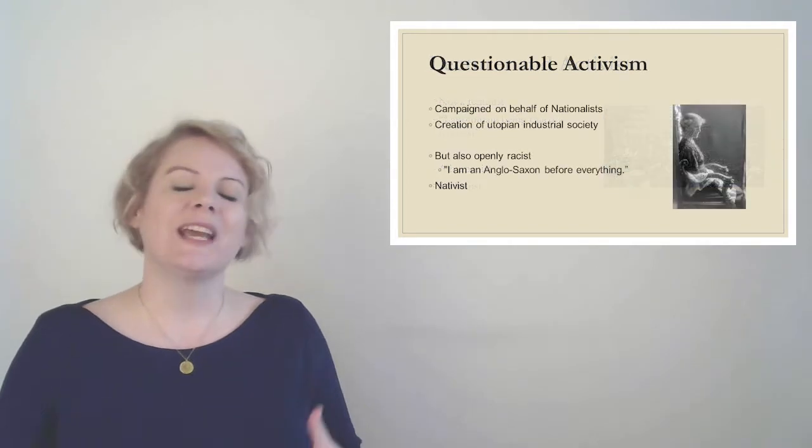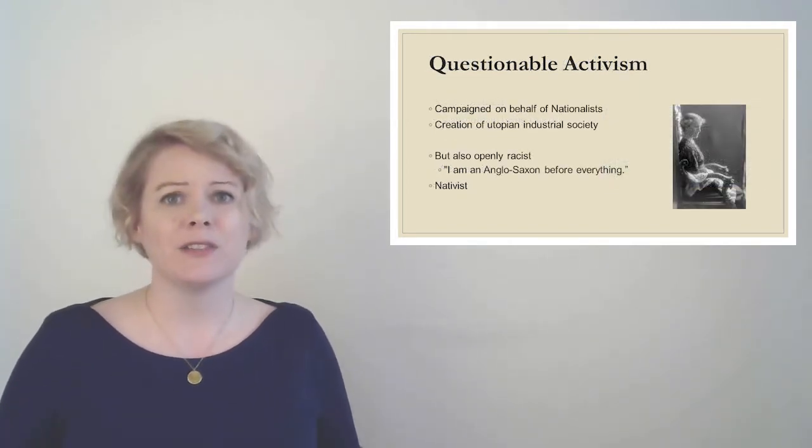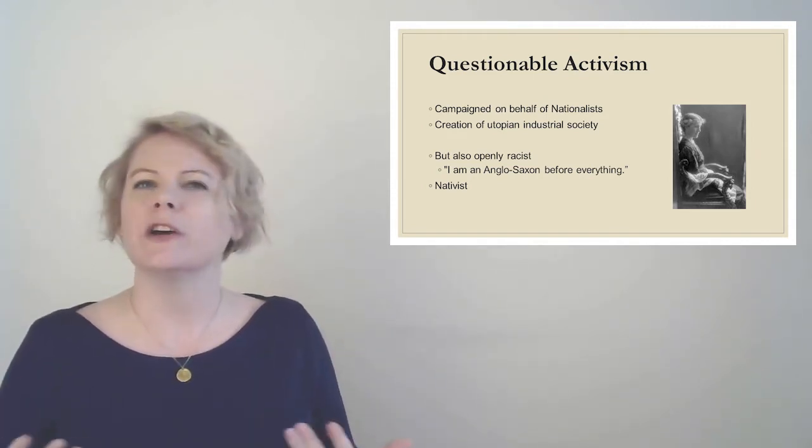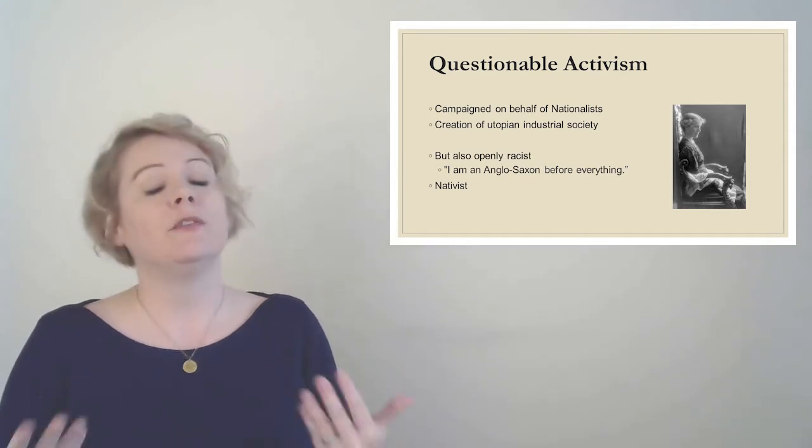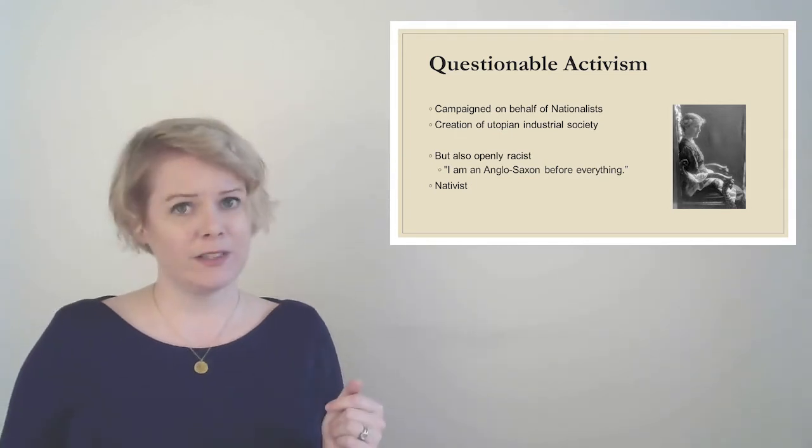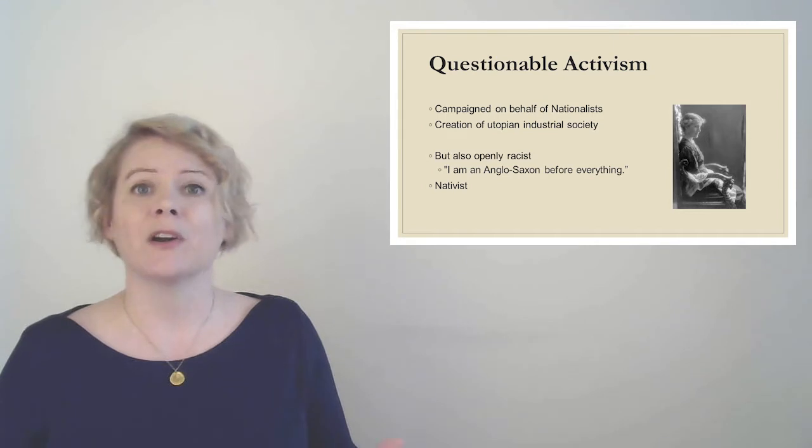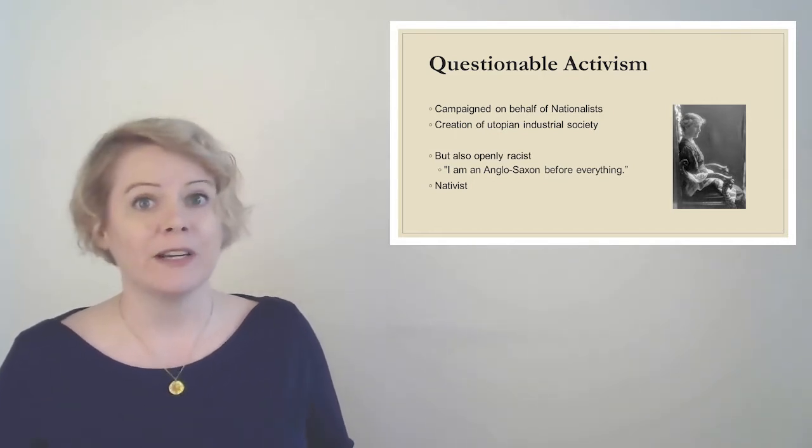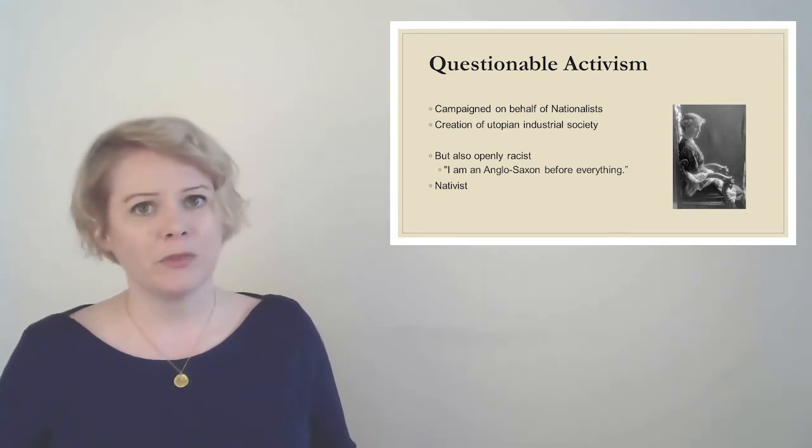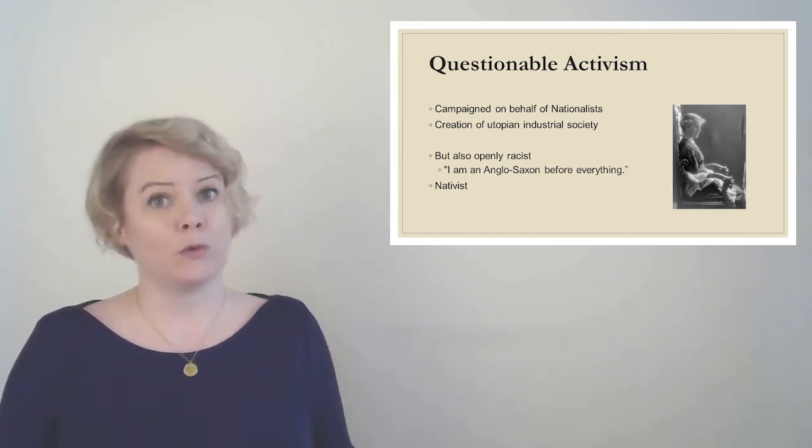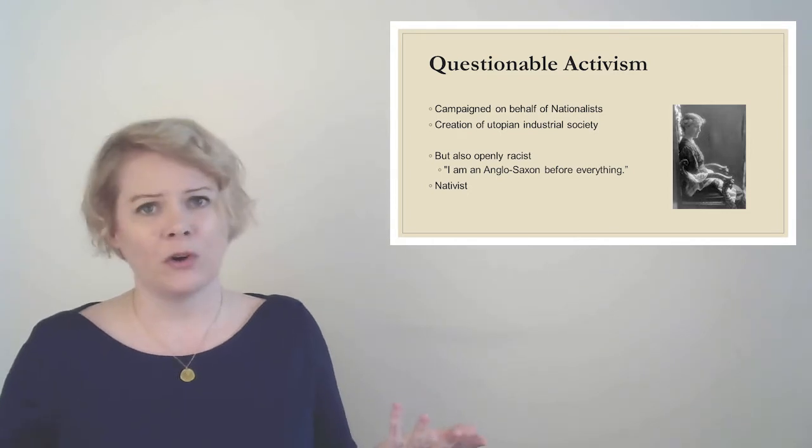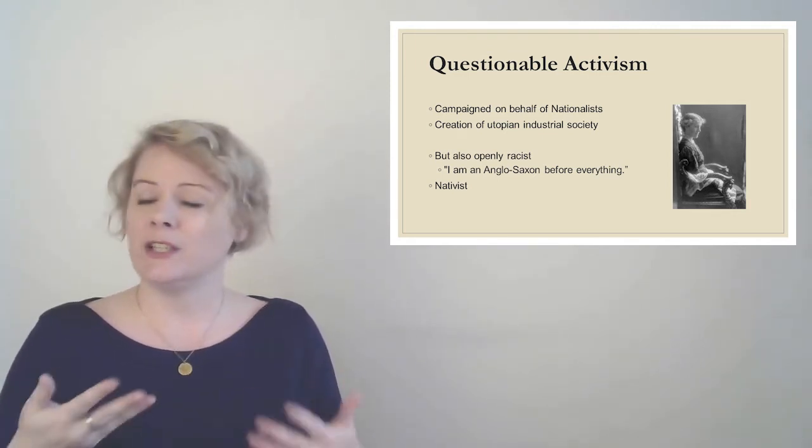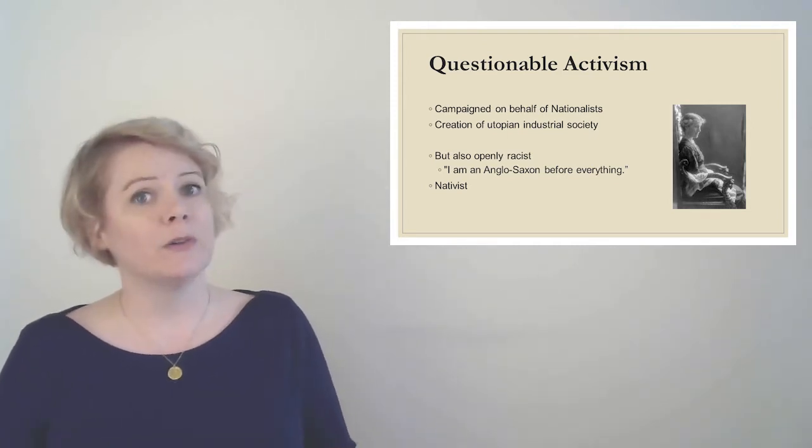She also, it's important to acknowledge, was engaged in some more questionable activism and some outright racism. She was a nativist. The nativist believed not that the native people to North America were the best, but that the recent immigrants, the white people, were the best. So basically the nativist believed that they were Anglo-Saxon above everything, which she outright said, and that other non-white populations should be controlled. So like many of our other core authors, she was not a perfect person. I'm never advocating that we believe wholeheartedly in everything anybody writes. But I do think it's important to acknowledge that she, like all of our other authors, had good parts and bad parts, and some of what she wrote down is useful to our larger discussion.